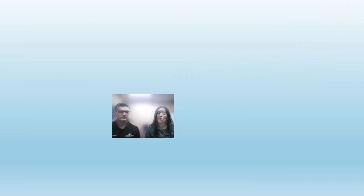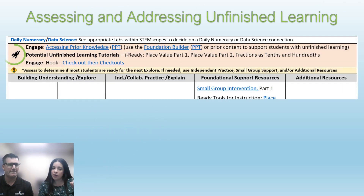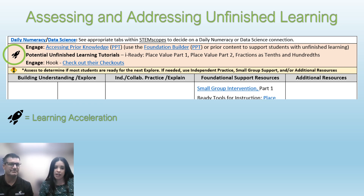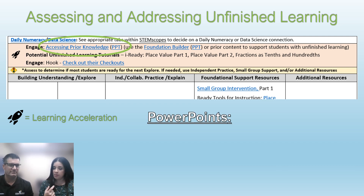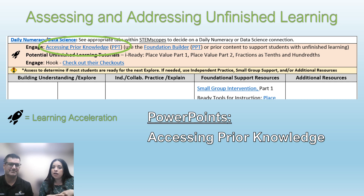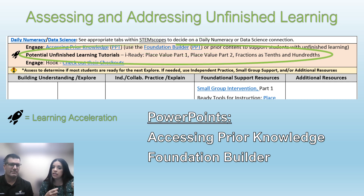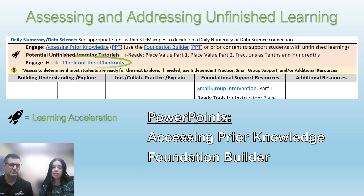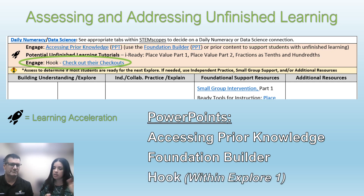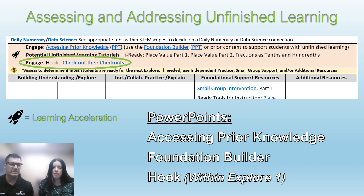The orange part has a rocket, which I remember from last year is the learning acceleration lesson. In the engage, I would start with the Accessing Prior Knowledge — I see PPT, which probably means there's a PowerPoint. Then from there, it looks like I would go to the Foundation Builder, which also has a PowerPoint. Then there are some iReady lessons I may or may not do depending on whether my kids get it. Then I would go to the Hook, and it looks like it's within Explorer 1 and has another PowerPoint. There is a PowerPoint for the Hook, but it's going to be within Explorer 1 because it often connects to that.